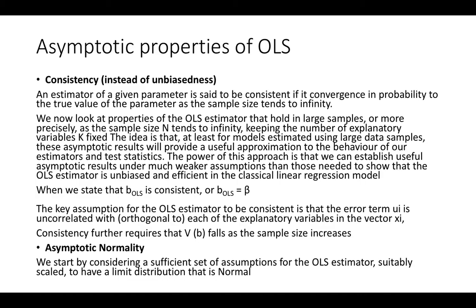Moving on to the asymptotic properties of OLS, there is a concept called consistency — in other words, unbiasedness. An estimator of a given parameter is said to be consistent if it converges in probability to the true value of the parameter as the sample size tends to infinity. If you have an estimator which seeks to measure a parameter, as the sample size increases, the estimator becomes closer and closer to that parameter. This is called the concept of consistency.